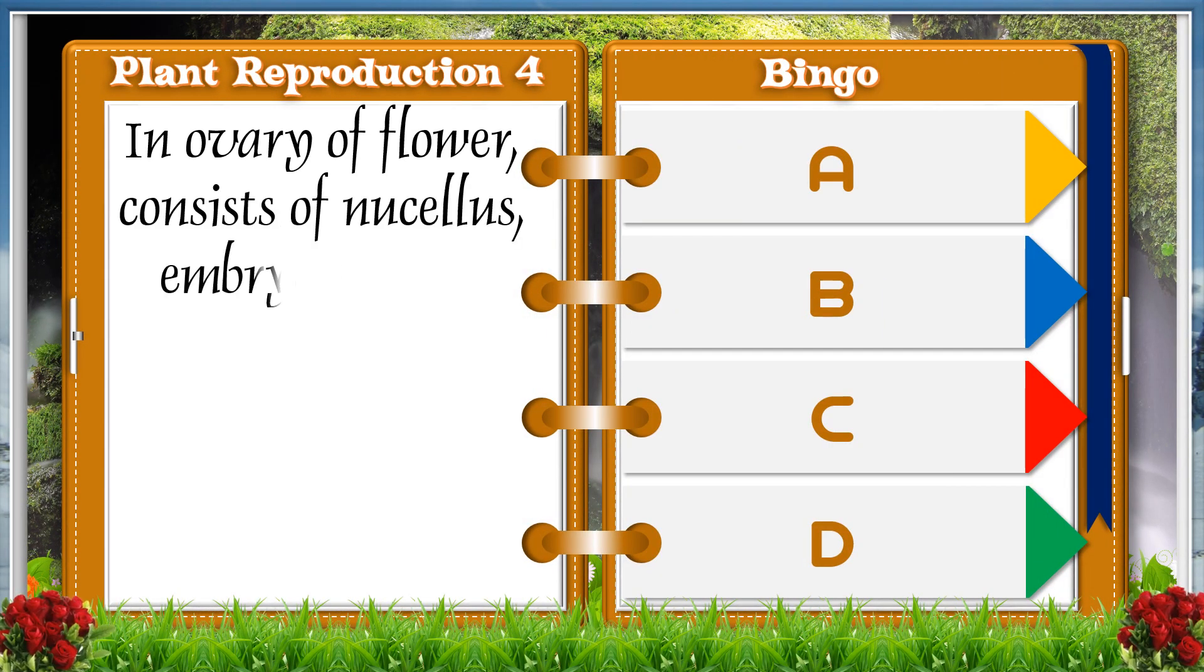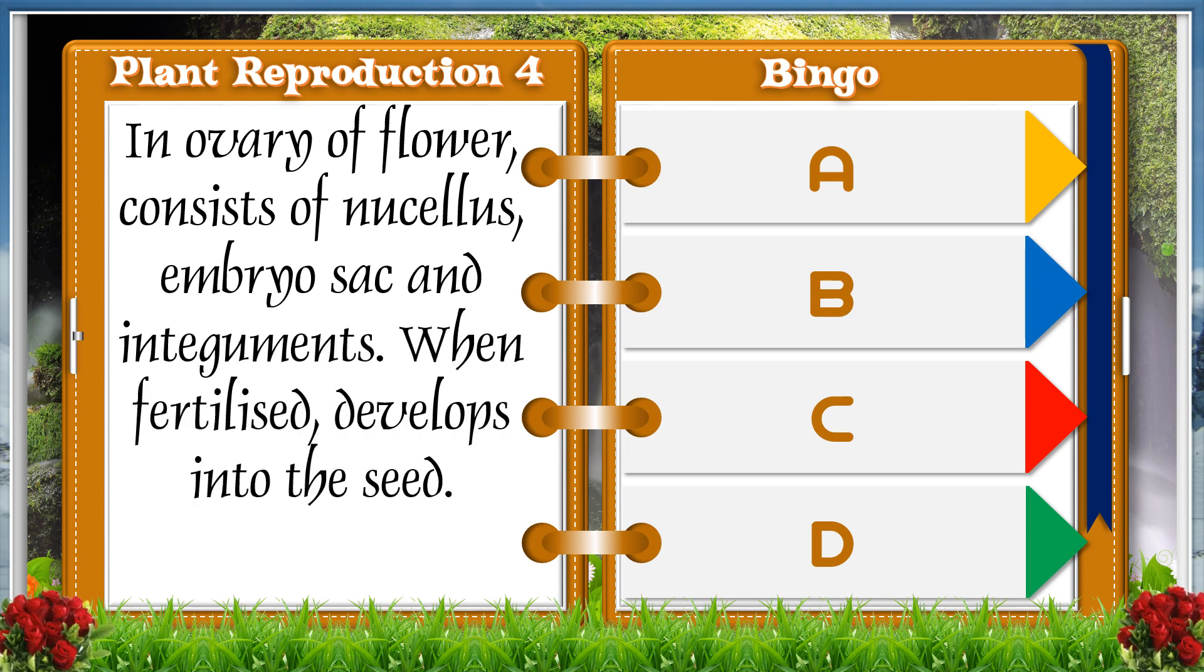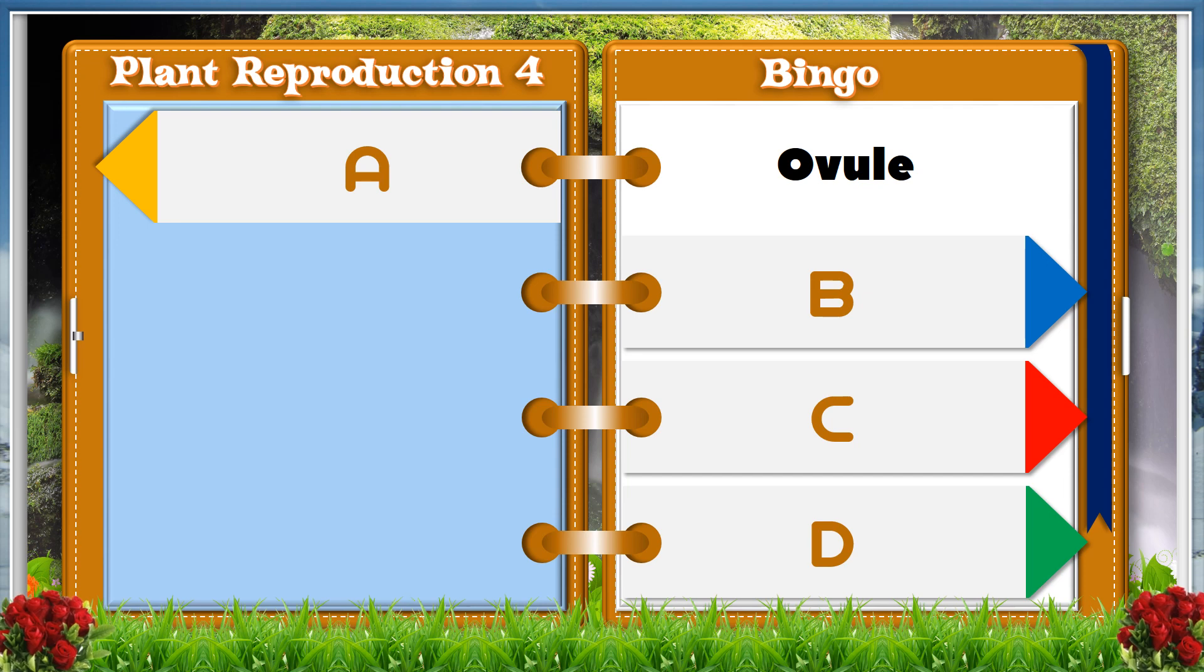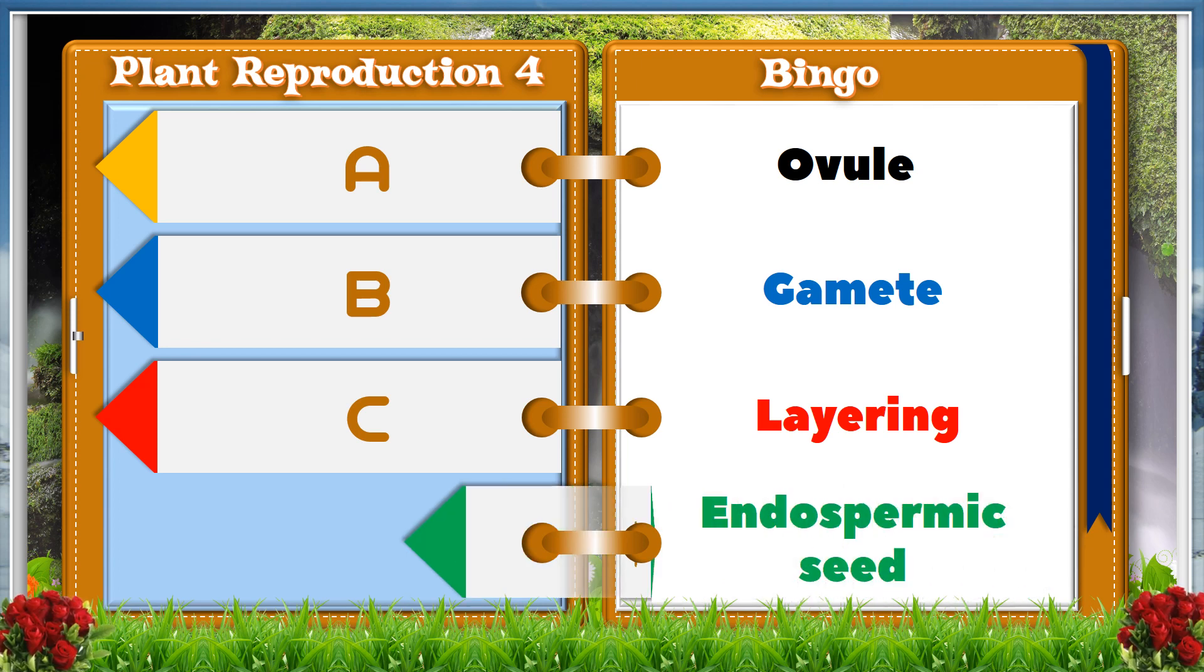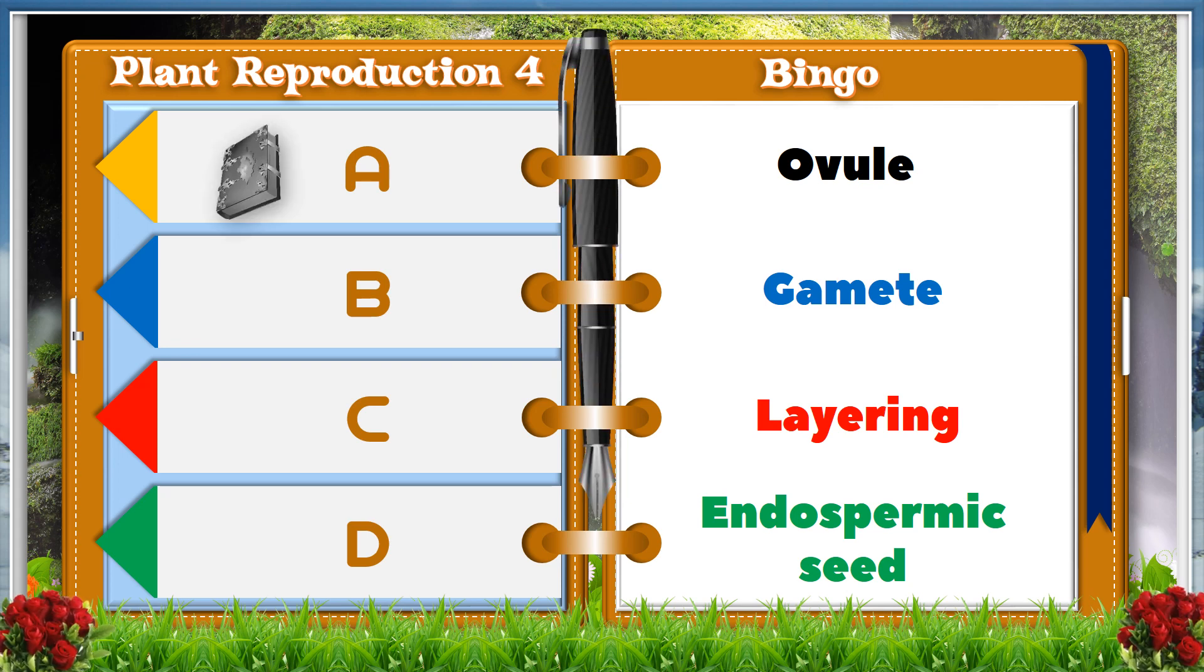In ovary of flower, consists of nucellus, embryo sac, and integument. When fertilized, develops into a seed. A. Ovule. B. Gamete. C. Layering. D. Endospermic seed. And the answer is A, Ovule.